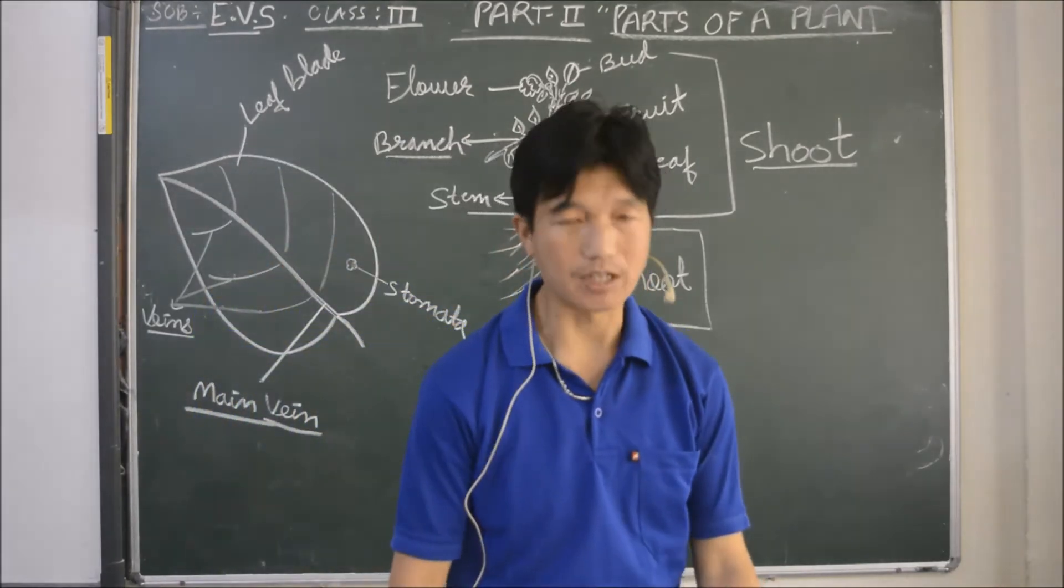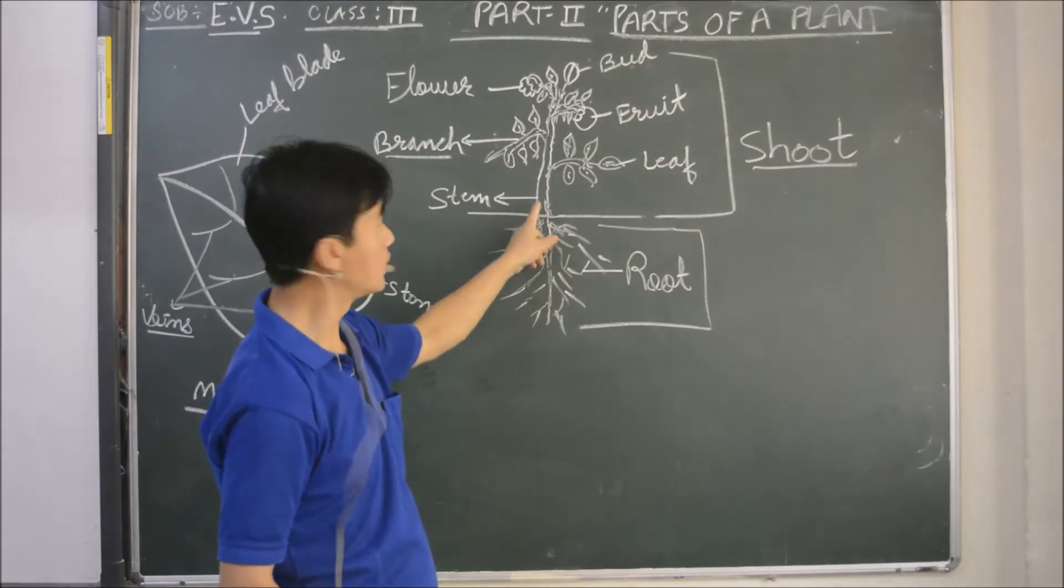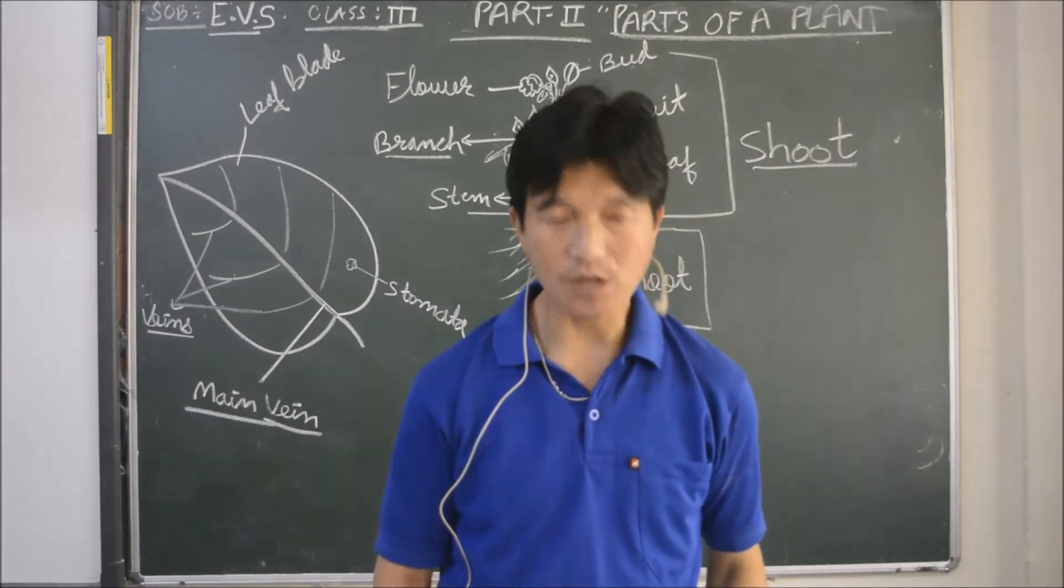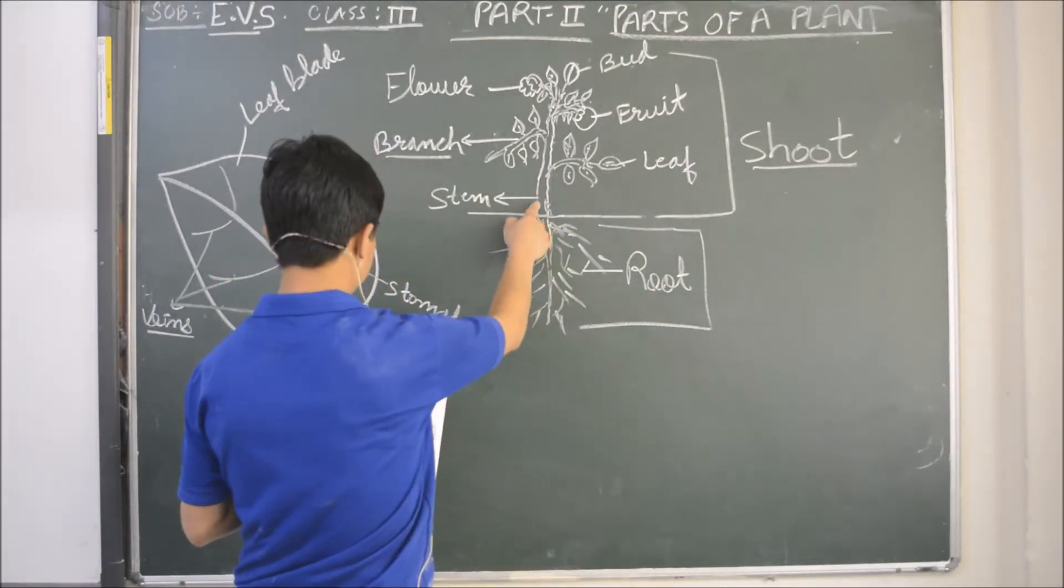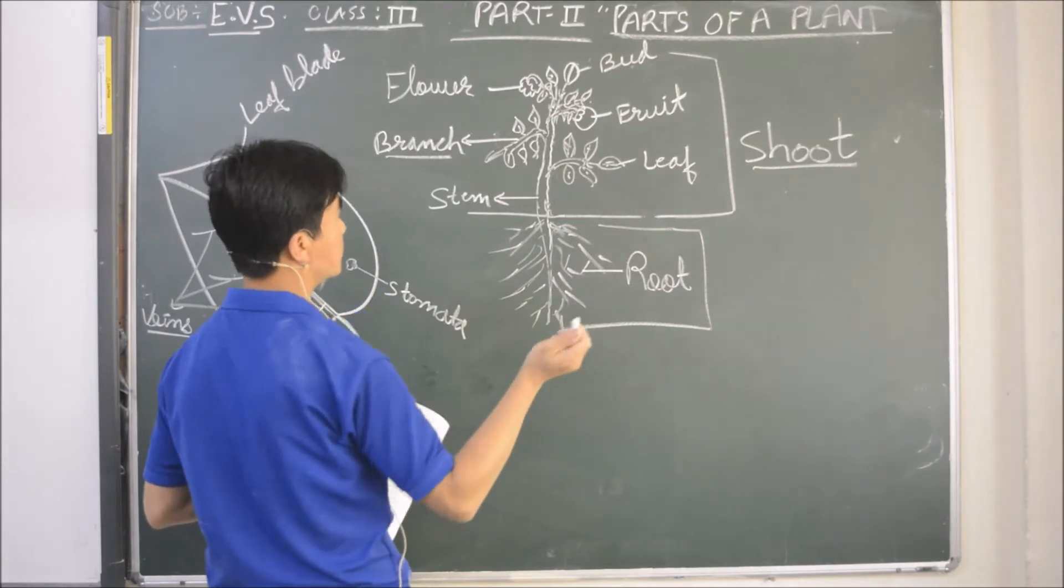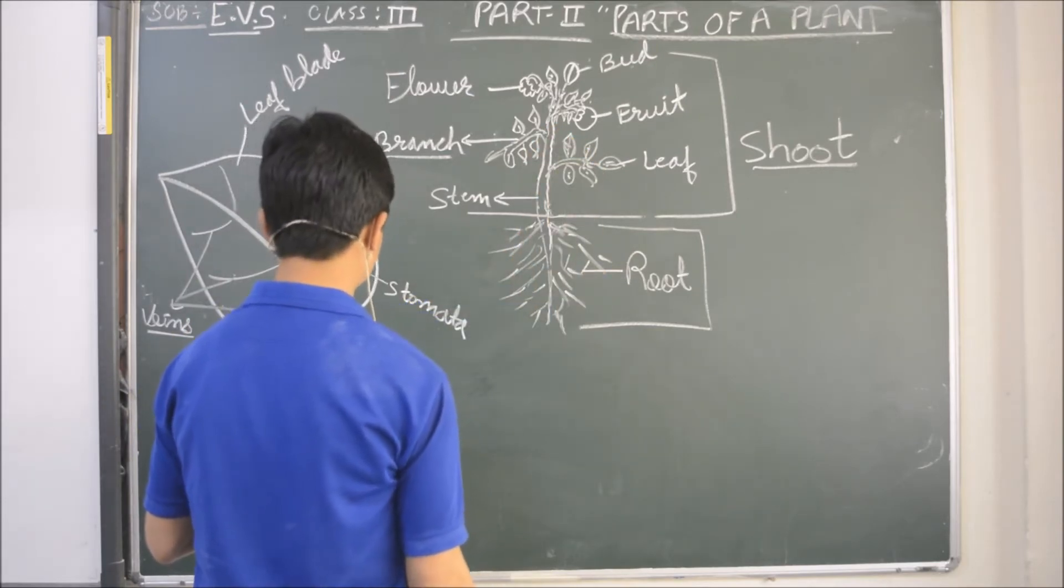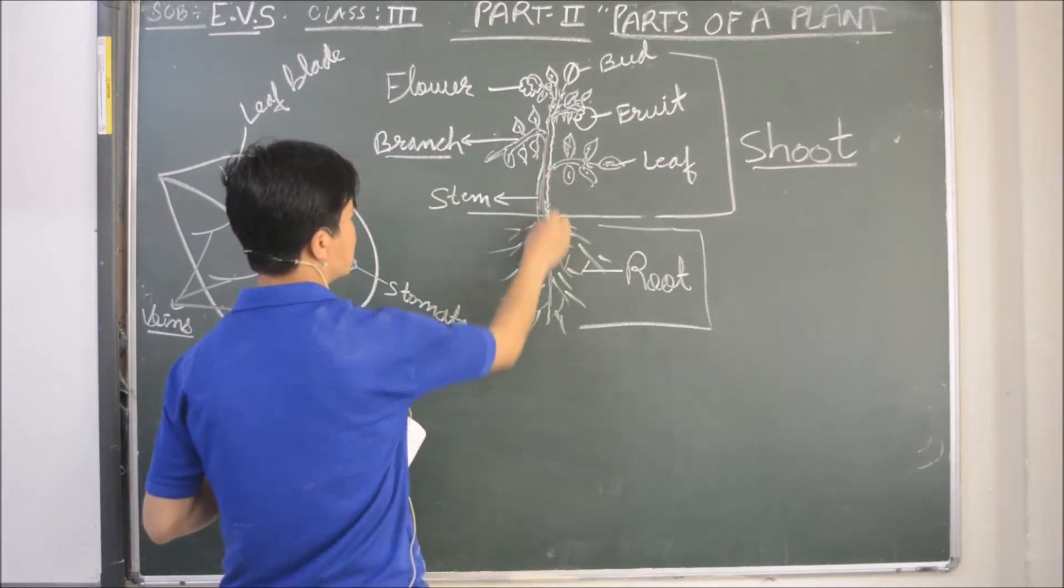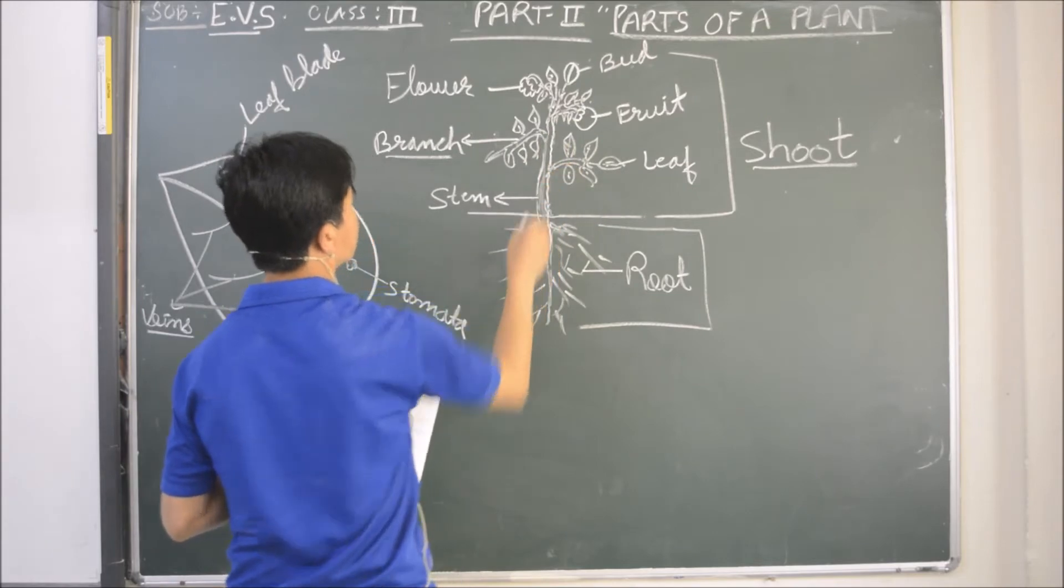Let's move on to stem. It carries water and minerals from the root. That's why it holds the plant upright and straight. So this stem holds the plant upright and straight. It bears different parts. I've already told you, that means branches, leaves, flowers, and fruits. And it carries water from the roots, this main, and takes to the different parts of a plant. Are you getting the point?